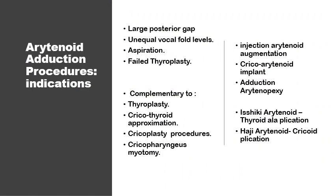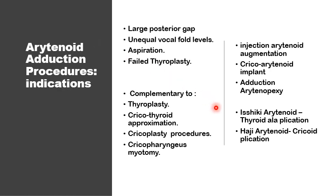If there is a large posterior glottic gap, unequal vocal fold levels, or continuous aspiration after a failed thyroplasty, we consider surgical procedures to adduct the arytenoid cartilage. These include injection augmentation of the arytenoid cartilage, placement of a small implant into the cricoarytenoid joint, fixing the cricoarytenoid joint by sutures in an adducted position, or pulling the lateral cricoarytenoid muscle forwards and laterally through the thyroid ala or cricoarytenoid cartilage. These arytenoid adduction procedures can be complementary to thyroplasties, cricothyroid approximation, cricoarytenoplasty, or cricopharyngeal myotomies.